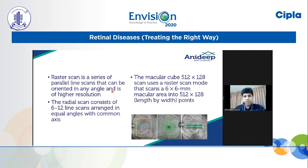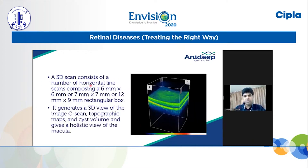These are the common protocols which are used. A raster scan is essentially a series of parallel line scans that can be oriented in any angle and gives very high resolution. A radial scan consists of 6–12 radial line scans and is important because it gives the orientation of the lesion with respect to the fovea. The most commonly done is the macular cube scan, which uses the raster scan mode in a 6×6 square millimeter area. We also have a 3D scan used for patient education — essentially the volume scan — which gives a better understanding to convince a patient for surgery and explain the disease.